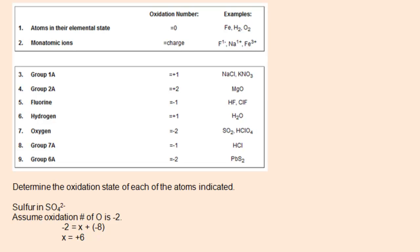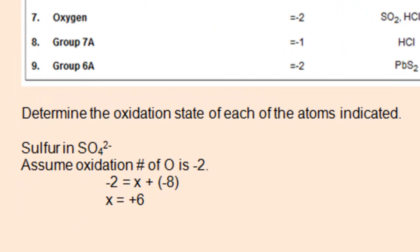The first problem involves determining the oxidation state of sulfur in the sulfate polyatomic ion. First, we're going to assume that the oxidation number of oxygen is negative two. One way to determine the oxidation number of sulfur is to set up an algebra problem, where the summation of the oxidation numbers of sulfur and oxygen must equal negative two.